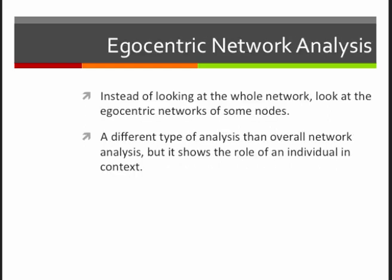A final method here is egocentric network analysis. So instead of looking at the network as a whole, we're going to look at egocentric networks of some or maybe even all of the nodes, and we're just going to analyze those egocentric networks. Now this is a different type of network analysis than analyzing the network as a whole, as we have been, but it gives us a lot of information about the roles of individuals in context. We can start to see which individuals are most important, why they're important, what their networks look like, and who they're connected to. So this can be a really useful thing to do, and in fact it's the basis for some of the network analysis that we'll be talking about later on.